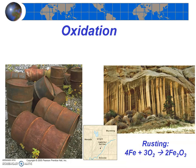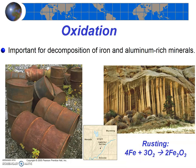Rusting is the oxidation of iron or aluminum to form iron oxides and aluminum oxides. Rusting can occur in the metals that make up your car, but it also occurs in the iron and aluminum-rich minerals in rocks. In either case, the resulting iron oxide minerals are the same: a reddish brown mineral called hematite and a yellowish brown mineral called limonite. These iron oxide minerals commonly give color to rock surfaces and soils.